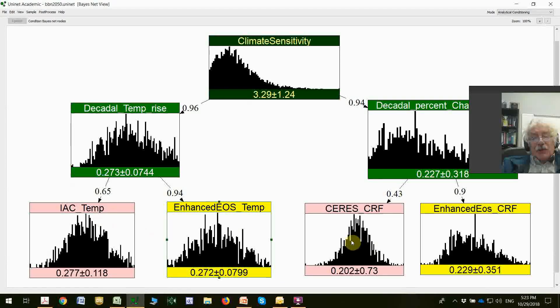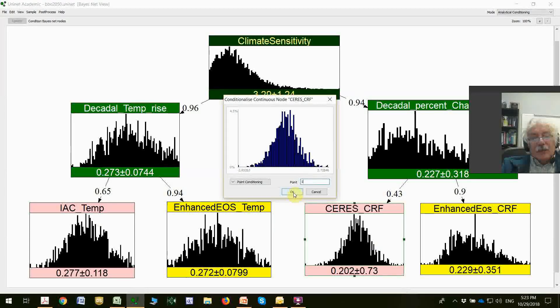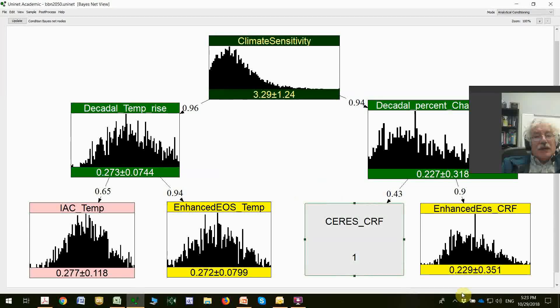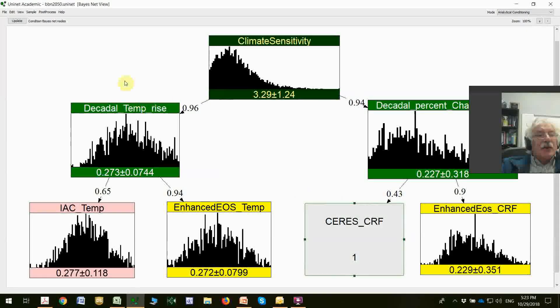Now suppose in 2050, we can measure the rate percentage change in CRF, and we observe the value of 1. That's a reasonably high value for this. How will this observation affect our knowledge of all of the other things in this graph?